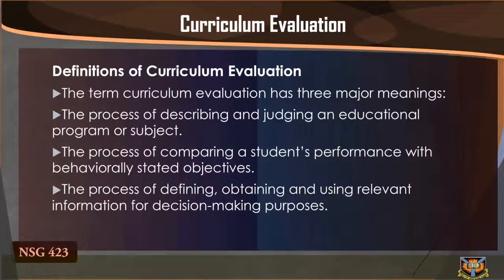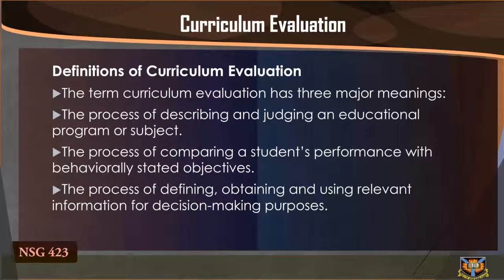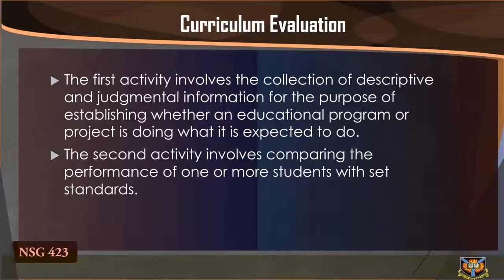Curriculum evaluation. The term curriculum evaluation has three major meanings: the process of describing and judging an educational program or subject; the process of comparing a student's performance with behaviorally stated objectives; and the process of defining, obtaining, and using relevant information for decision-making purposes. Each does not exist in isolation from the others, although each can be an activity on its own. The first activity involves the collection of descriptive and judgmental information for the purpose of establishing whether an educational program or project is doing what it is expected to do.